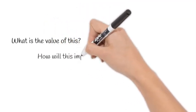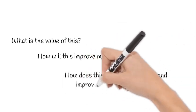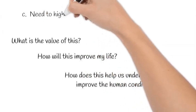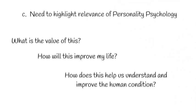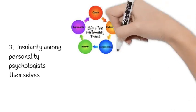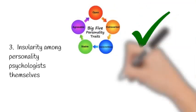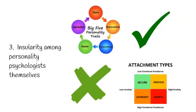Another reason is that personality psychologists often forget the need to highlight the usefulness of personality psychology. They forget to answer questions such as: what is the value of this? How will this improve my life? How does this help us understand and improve the human condition? A third issue in personality psychology is the insularity among personality psychologists themselves. For example, those studying the Big Five usually think it is more important to the field versus the topic of attachment, which many personality psychologists consider to be unrelated to personality.